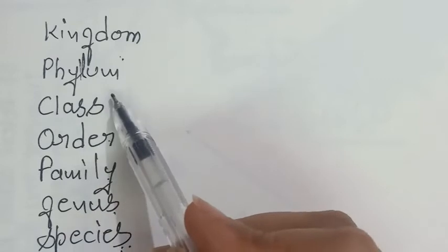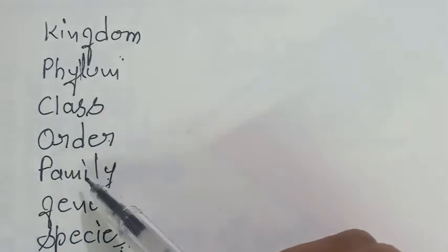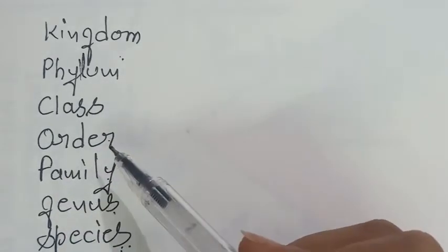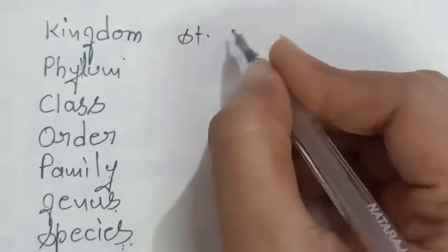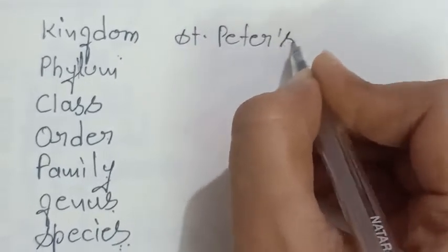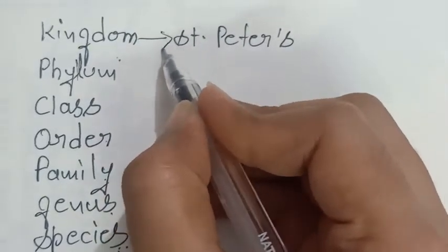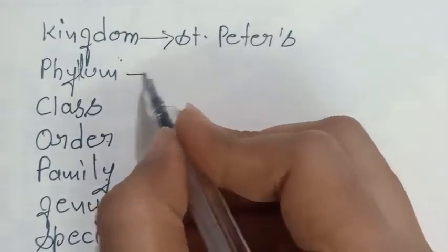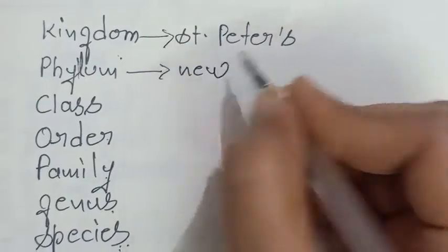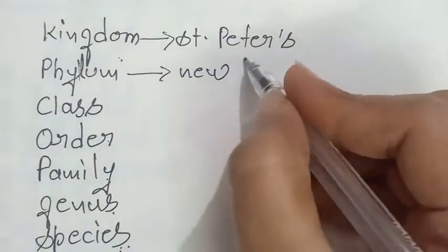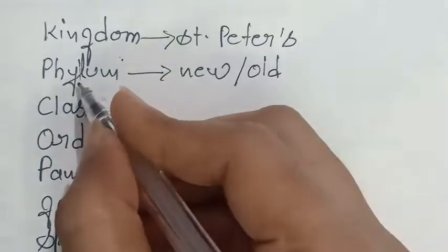Kingdom includes number of phyla and includes all the organisms that share a set of specific common characteristics. For example, your parent comes to school to meet you. So the St. Peter's school, the St. Peter's will play a role of kingdom. Then in which building you are, new building or the old one, this will act like a phylum.